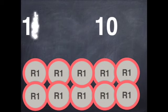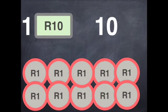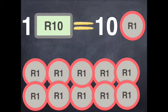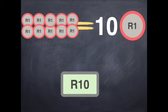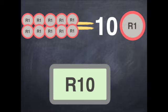Another way that we can say this is that 1 10 rand note is equal to 10 1 rand coins. In other words, I give you the 10 rand note and you would give me 10 1 rand coins because they are equal.